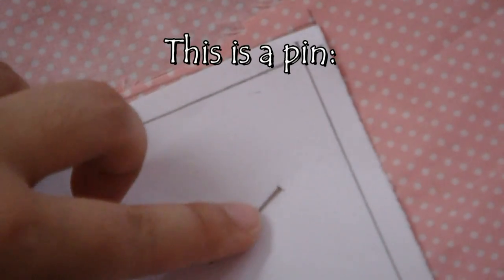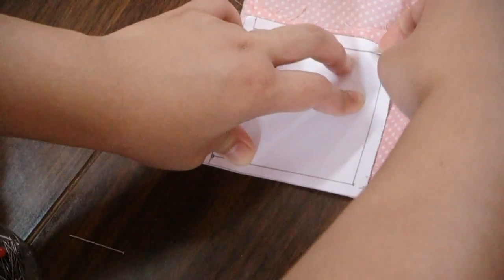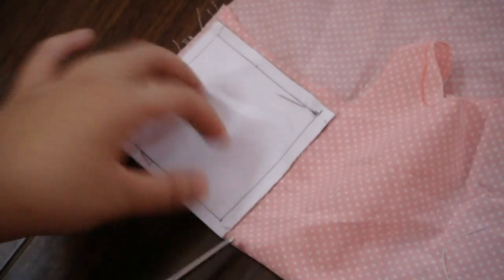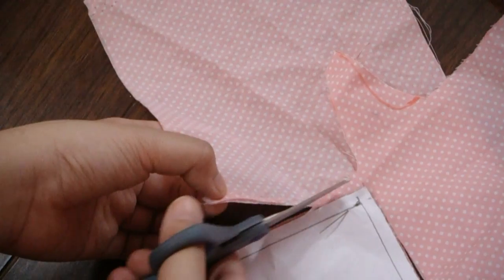And then I'm going to use sewing pins to pin the pattern to the two layers of fabric and cut them all in one big sandwich, trimming the edges to be as smooth as possible.